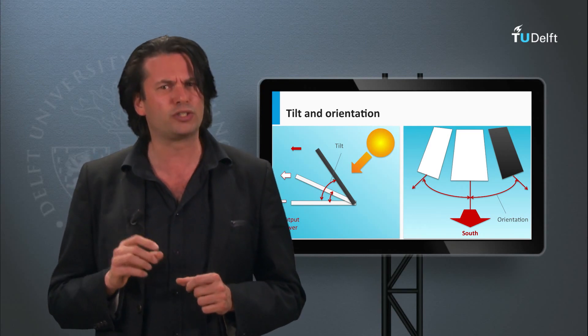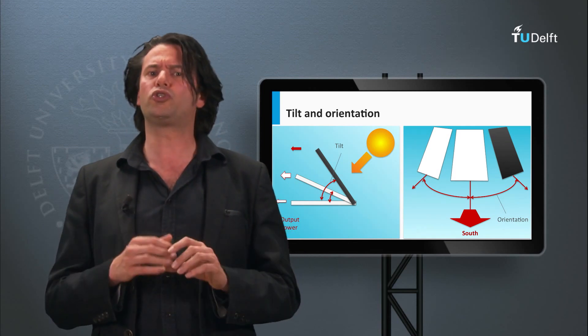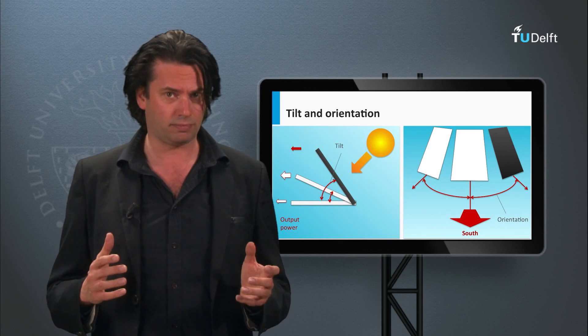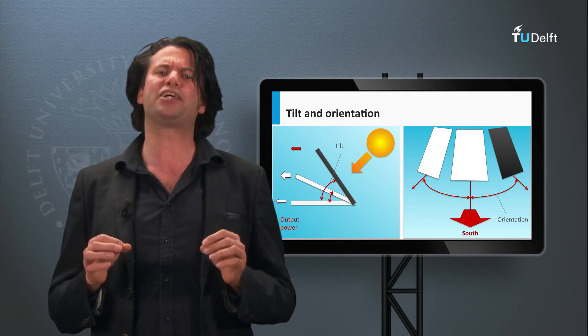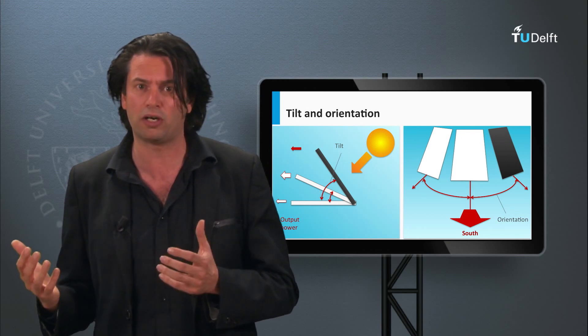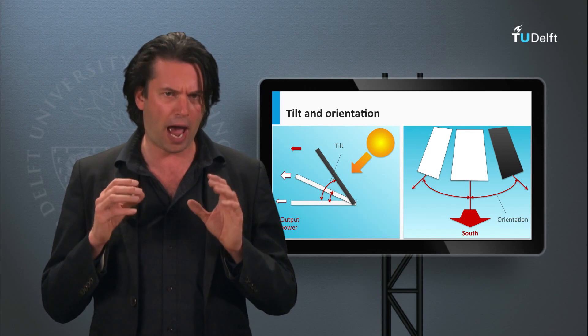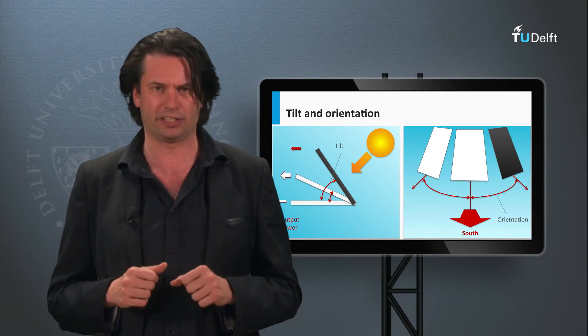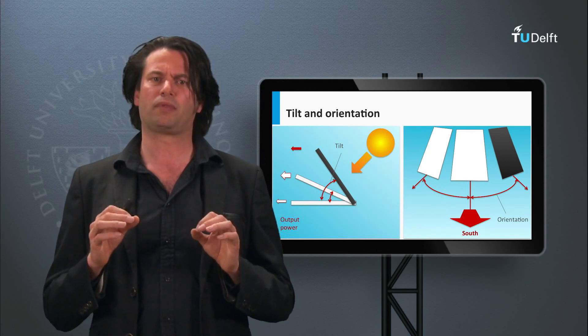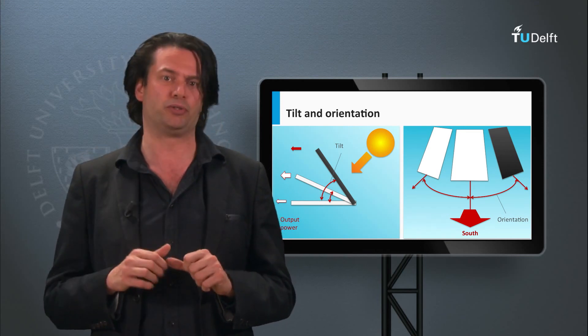It is also interesting to note that the optimized tilt could also be based on the seasons. That is, we could either use an angle that maximizes the PV yield in summer or in winter. This could be interesting for application-specific PV systems. Thus, we have seen the importance of the orientation and tilt for the PV module.